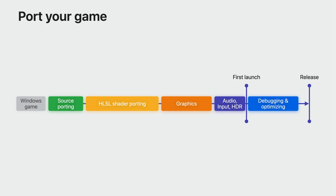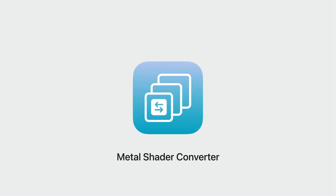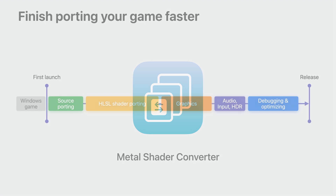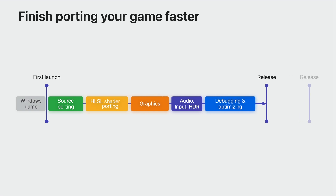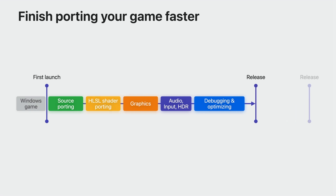With the help of the Game Porting Toolkit, you can now see your game's first scene running on the platform much earlier. The Game Porting Toolkit includes a new Metal Shader Converter, which you can use to automatically convert all of your existing HLSL GPU shaders to Metal. With the Metal Shader Converter, bringing your shaders and graphics to Mac takes a lot less time too. You can ship sooner and still have more time to take advantage of the unique features of Mac and Apple Silicon.